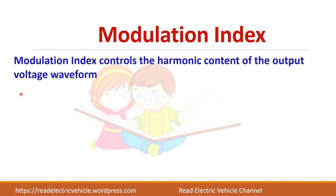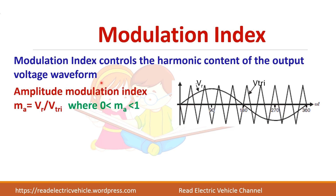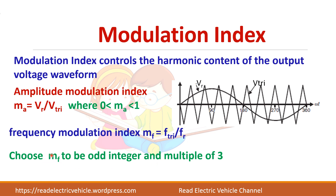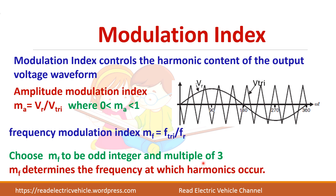The modulation index controls the harmonic content of the output voltage waveform. In sinusoidal PWM, the modulation index MA is given by the reference wave peak voltage divided by the carrier (triangular) wave peak voltage, and is normally kept less than 1. The frequency modulation ratio MF is the triangular wave frequency divided by the sinusoidal frequency. In a three-phase circuit, MF should be chosen as an odd integer and a multiple of three, which helps eliminate third order harmonics and determines the frequency at which harmonics occur.